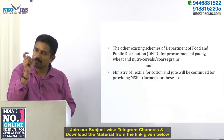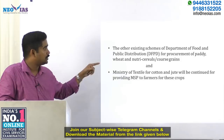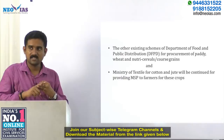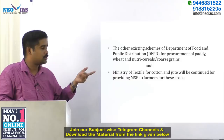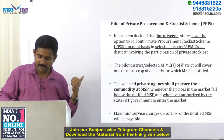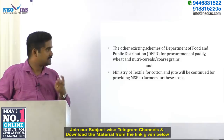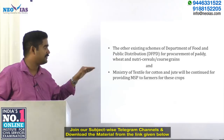There are other existing schemes that continue alongside PM ASHA. The Department of Food and Public Distribution handles procurement of paddy, wheat, and coarse grains, while the Ministry of Textiles procures cotton and jute. These separate procurement mechanisms will continue to provide MSP to farmers for these crops, without any change. PM ASHA's key focus remains on oil seeds, pulses, and copra.